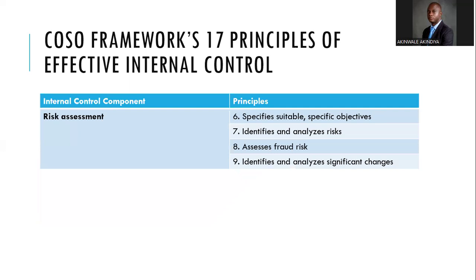Principles six through nine are mapped to risk assessment. Principle six: specify suitable, specific objectives. We need to know the business objectives and risk management objectives, which must be aligned. This includes the risk appetite of the organization — a risk appetite statement should be written, approved, and publicized so everybody knows the level of risk the business is ready to take and can map risk management objectives to business objectives.